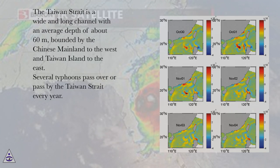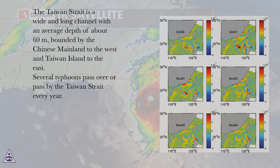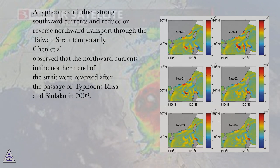The Taiwan Strait is a wide and long channel with an average depth of about 60 meters, bounded by the Chinese mainland to the west and Taiwan island to the east. Several typhoons pass over or pass by the Taiwan Strait every year. A typhoon can induce strong southward currents and reduce or reverse northward transport through the Taiwan Strait temporarily.